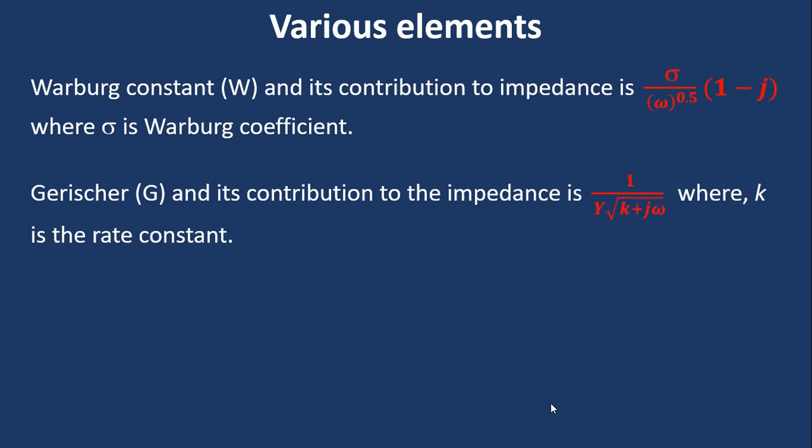Next is Gerischer that we are denoting by G, and its contribution to the impedance is 1/(Y√(k + jω)), where k is the rate constant. And the definition of Y is the same as the Warburg constant.